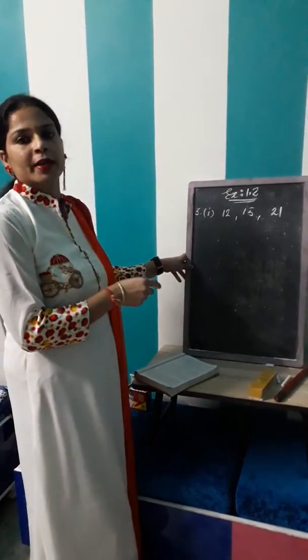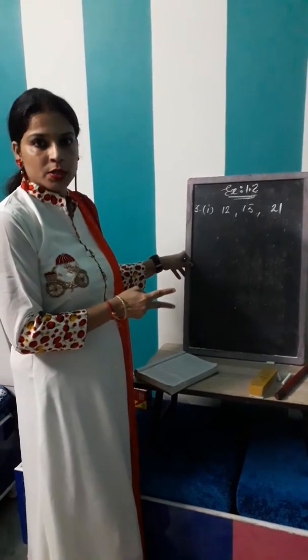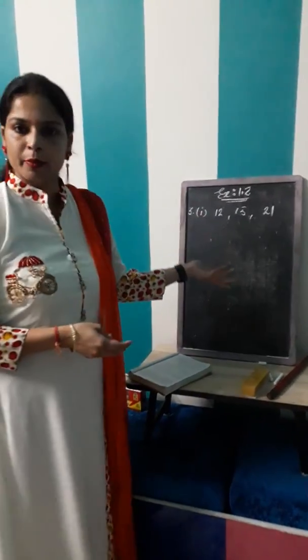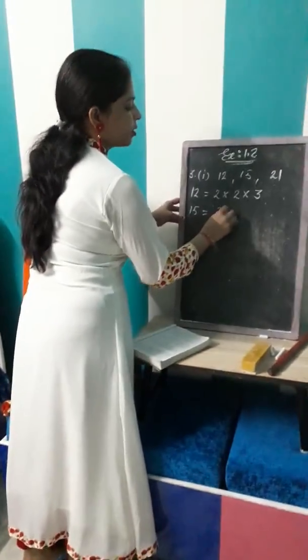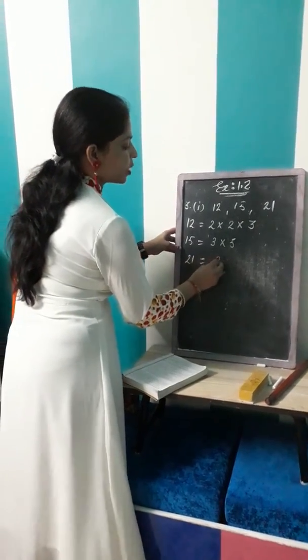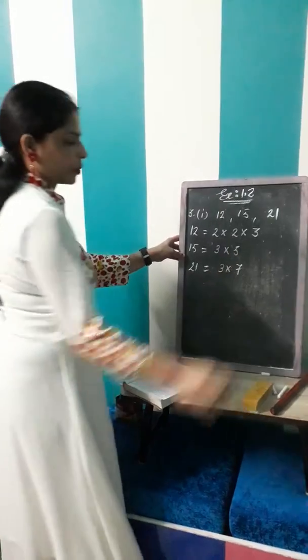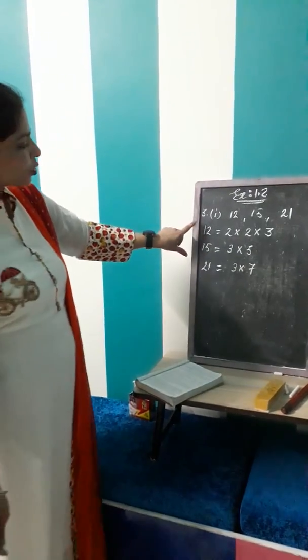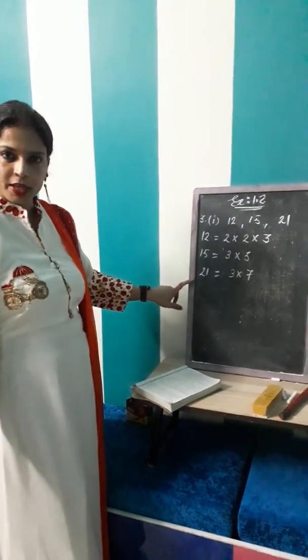The same rule we applied for two numbers is applicable here. So the prime factorization of 12 is 2 multiplied by 2 multiplied by 3. 15 is equal to 3 multiplied by 5, and 21 is 3 multiplied by 7. So this is the prime factorization of these three numbers.